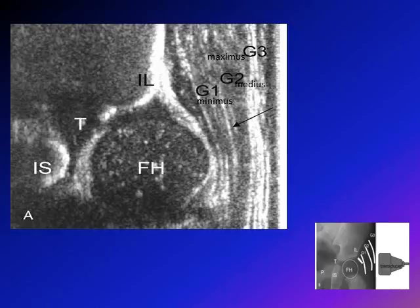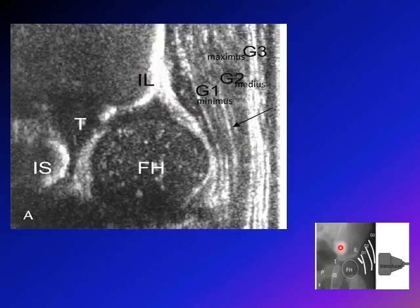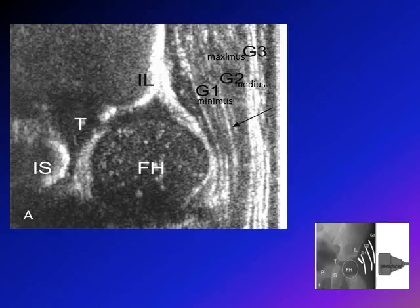On the coronal flexion ultrasound view, the abductors — gluteus maximus, medius, and minimus — are seen at the top. The femoral head appears as a round structure. The iliac crest is the dense white structure, the bony acetabulum is adjacent to it, the dark area is the triradiate cartilage (non-ossified), and the ischium is below.